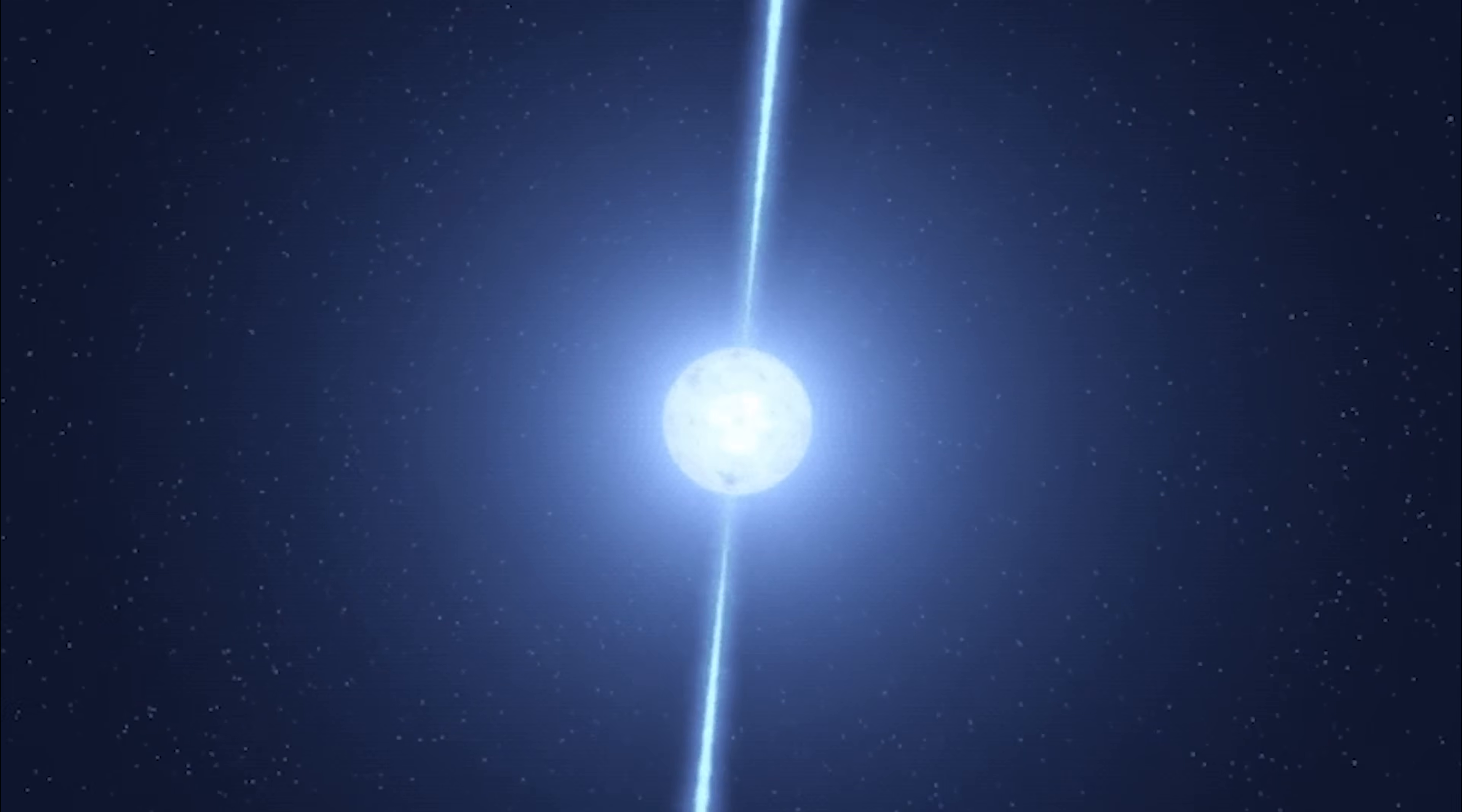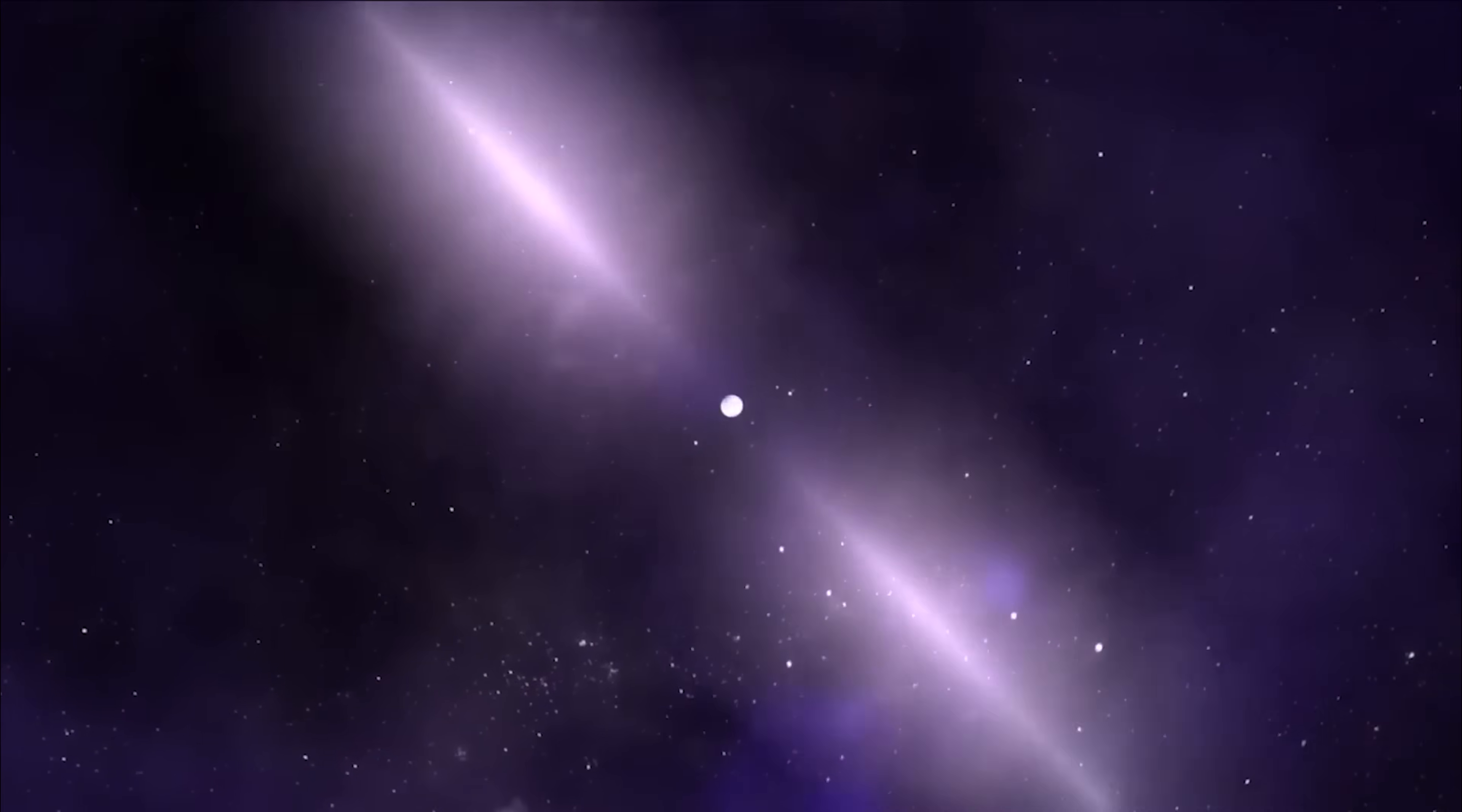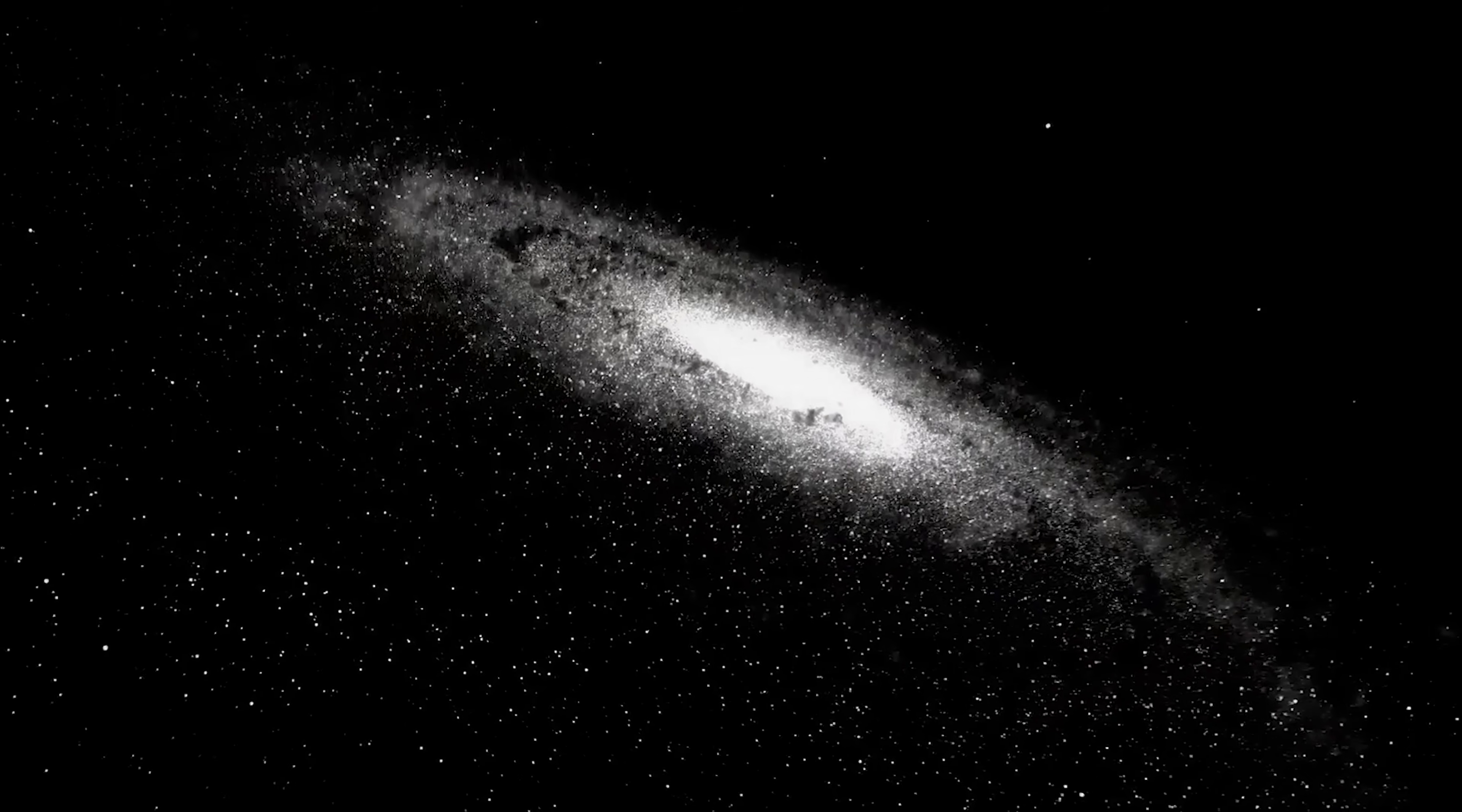Their pulses are so regular that even the tiniest disturbances, like ripples from gravitational waves or the tug of a passing mass, can throw their timing off. Because of this precision, pulsars have long been used to map gravitational effects across the universe. By carefully monitoring these ticks of cosmic clocks, scientists can pick up on extremely subtle gravitational pulls from massive and even invisible objects. This makes pulsars a powerful tool for directly probing how mass is distributed across our galaxy without needing to see anything directly.